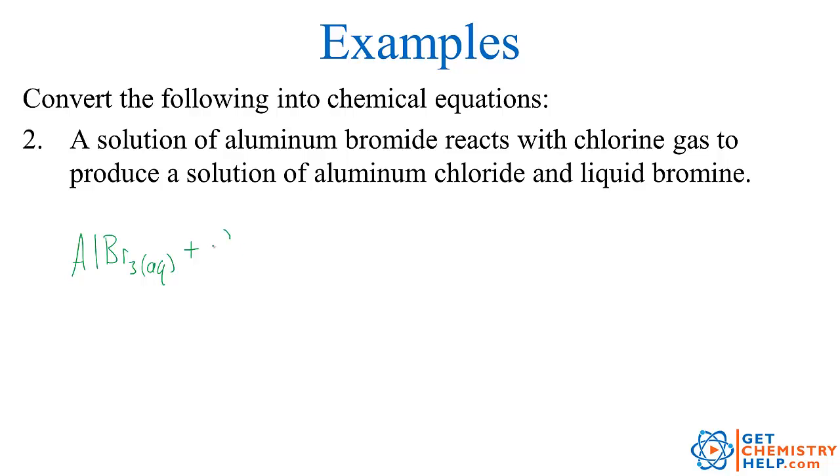Well again, chlorine is one of our seven diatomics, so it's not just Cl, it's Cl2 and a gas to produce a solution of aluminum chloride. Aluminum chloride is AlCl3 aqueous.